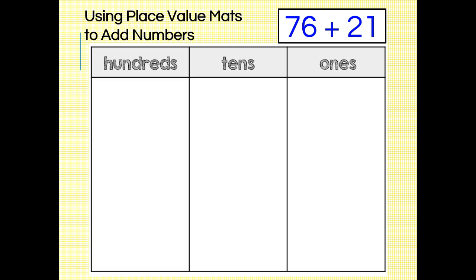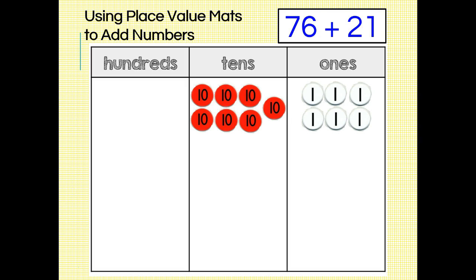How many tens disks do I need for 76? That's right, seven. How many ones disks? Yes, six. How about 21? I need two tens disks and one ones disk. We're ready to total our place value columns now.